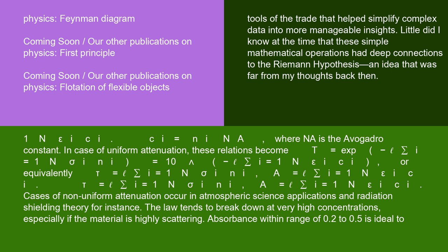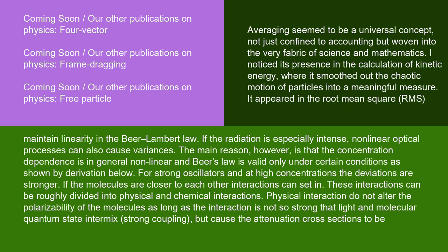Cases of non-uniform attenuation occur in atmospheric science applications and radiation shielding theory, for instance. The law tends to break down at very high concentrations, especially if the material is highly scattering. Absorbance within a range of 0.2 to 0.5 is ideal to maintain linearity in the Beer-Lambert Law. If the radiation is especially intense, non-linear optical processes can also cause variances. The main reason, however, is that the concentration dependence is in general non-linear, and Beer's Law is valid only under certain conditions. For strong oscillators and at high concentrations, the deviations are stronger.